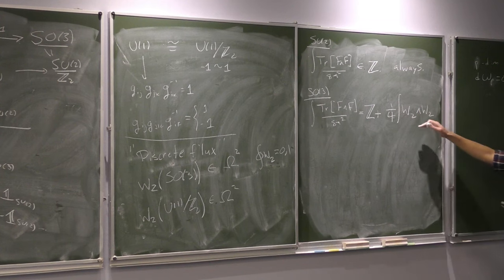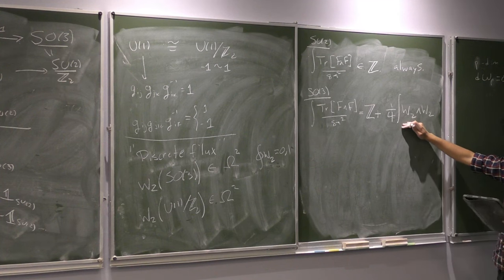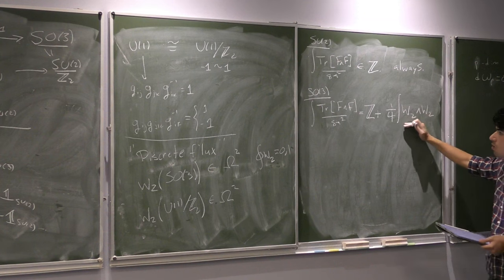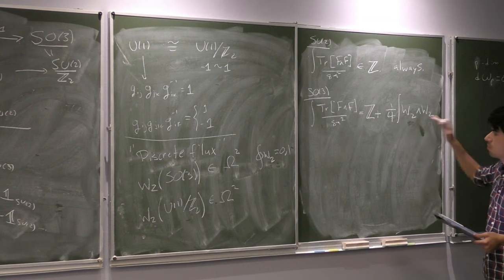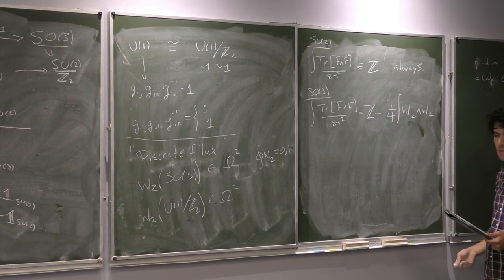For an SU(2) theory, (1/8π²) ∫ Tr(F ∧ F), with the correct normalization, is always an integer. For an SO(3) bundle, that's not true — it equals an integer plus one-fourth times the integral of w_2 ∧ w_2. So in the most general setting, this can be one-fourth.